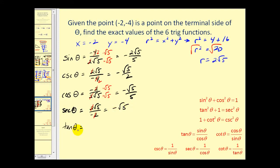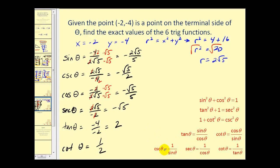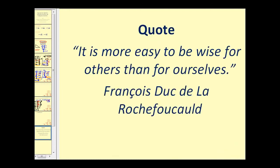Tangent theta equals y over x, so negative four over negative two equals two. And cotangent theta is the reciprocal of tangent theta, so the reciprocal of two is one-half. Here we used several of the reciprocal identities to help find these function values. I hope you found this video helpful — thank you and have a good day.